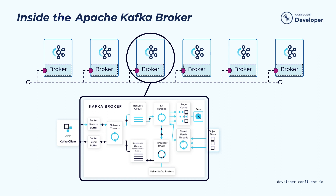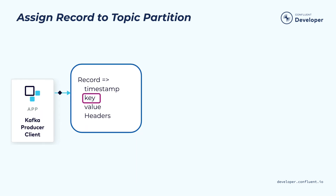First, let's go through how a produce request is handled. The producer client starts by sending a record, then the producer library will use a pluggable partitioner to decide which partition in this topic this record should be assigned to. If the key is specified in the record, the default partitioner assigner will use the key to hash into a particular topic partition deterministically, and always route the records with the same key to that same partition. If the key is not specified, then this record will be selected in a round-robin way for the next partition.